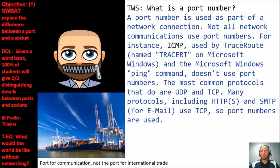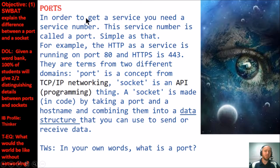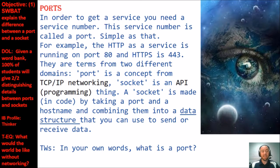A port can be described as an internal address within a host that identifies a program or process. A socket can be described as a programming interface allowing a program to communicate with other programs or processes on the internet or locally. In order to get a service, you need a service number — that's called a port. HTTP runs on port 80, HTTPS on port 443. Port is a concept from TCP/IP networking; a socket is an API — a programming thing. A socket is made in code by taking a port number and hostname and combining them into a data structure you can use to send or receive data.